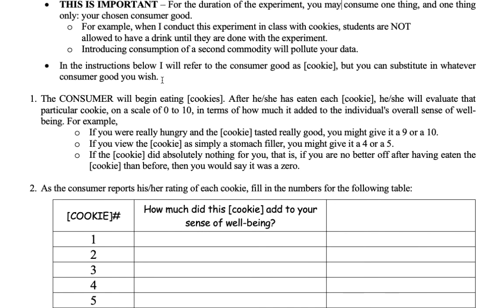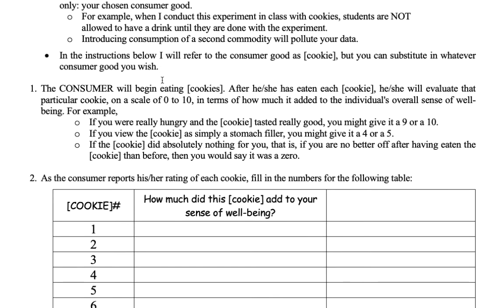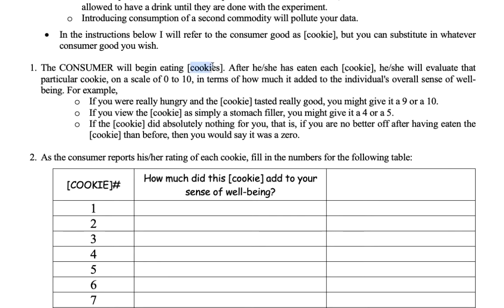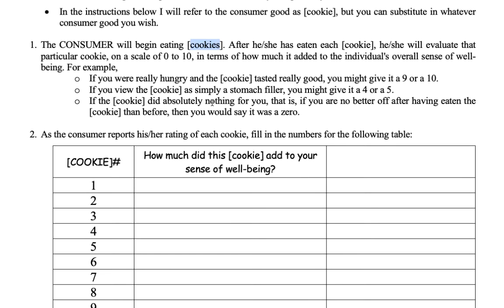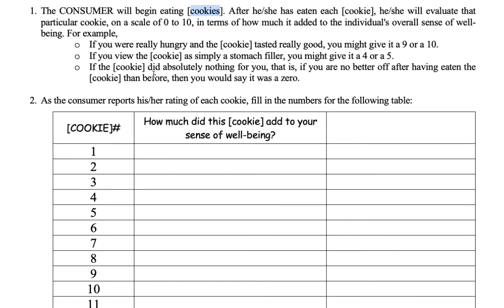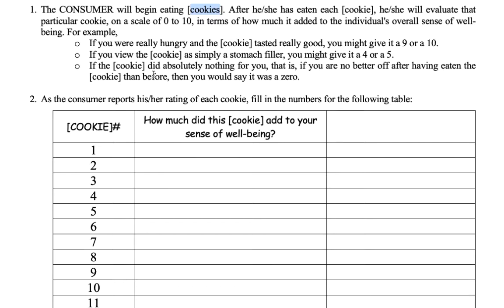Choose whatever consumer good you wish — I'm going to refer to it generically as cookies in the handout. You begin consumption and give each unit a rating like I talked about in video 17. If it was a top rating, give it a 9 or 10. If it was just sort of a filler but not awesome, maybe it was a 4 or 5. If it did nothing for you and added nothing to your well-being, give it a 0.